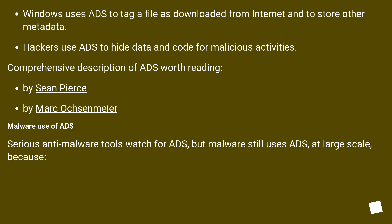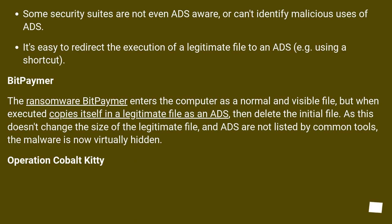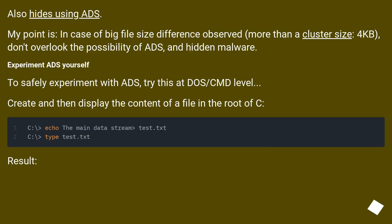Malware use of ADS: serious anti-malware tools watch for ADS, but malware still uses ADS at large scale because some security suites are not even ADS-aware, or can't identify malicious uses of ADS. It's easy to redirect the execution of a legitimate file to an ADS, for example using a shortcut. The ransomware BitPaymer enters the computer as a normal and visible file, but when executed copies itself into a legitimate file as an ADS, then deletes the initial file. As this doesn't change the size of the legitimate file and ADS are not listed by common tools, the malware is now virtually hidden. Operation Cobalt Kitty also hides using ADS. In case of a big file size difference — more than a cluster size of 4 kilobytes — don't overlook the possibility of ADS and hidden malware.